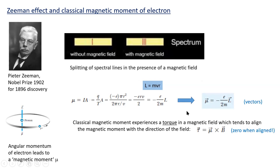How does the magnetic field affect this magnetic moment? A classical magnetic moment experiences a torque in a magnetic field which tends to align the magnetic moment with the direction of the field. If we put a magnetic field on in a diagonal direction, there would be a torque on the magnetic moment which would tend to rotate the plane of the orbit until the magnetic moment aligned with the magnetic field. When the magnetic moment and field are in the same direction, the torque is mu × B × sin(θ) with θ = 0, giving zero torque — so when aligned there's no more rotation.